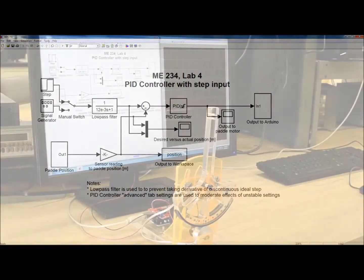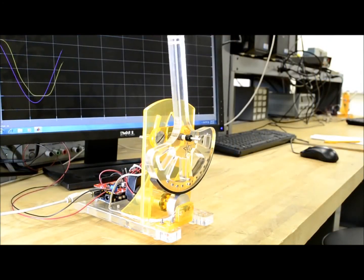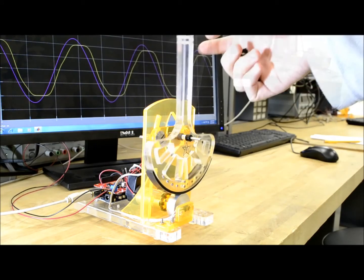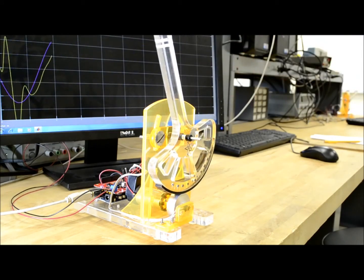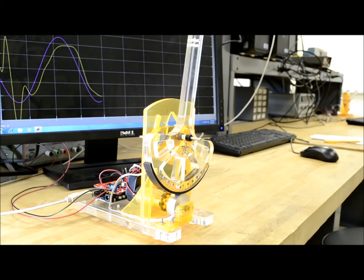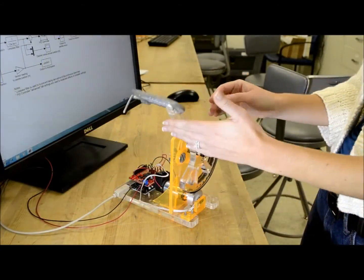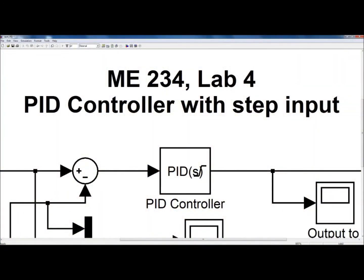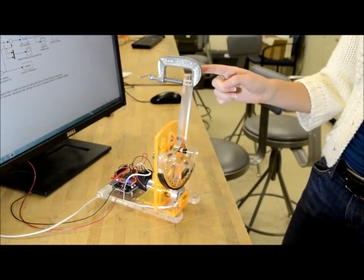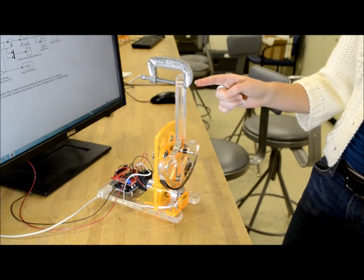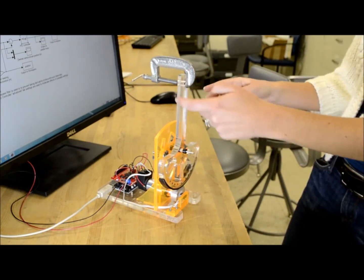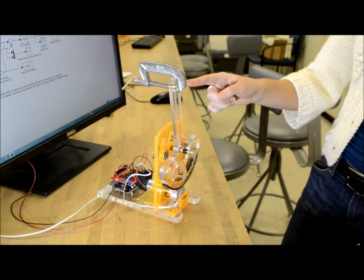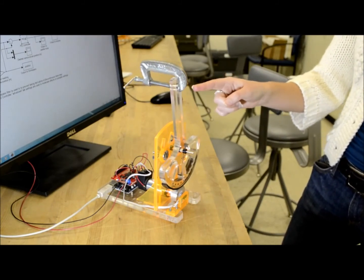To introduce control theory, students develop simple controllers in Simulink and test them using the paddle. Students add mass to destabilize the paddle and learn to program a PID controller in Simulink to stabilize it. These are just a few examples of how we've used the flexibility and transparency of Simulink to teach system dynamics.